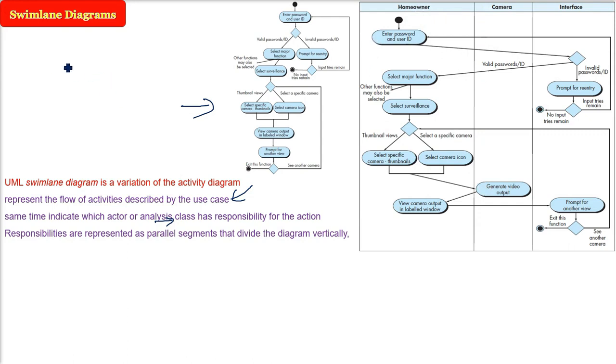Now if you are into swimming, you know there are lanes. These are the parallel segments that we have divided in the diagram vertically. These are different swim lanes and each swim lane is representing a class or an actor.